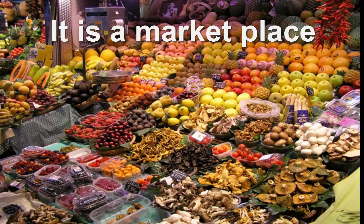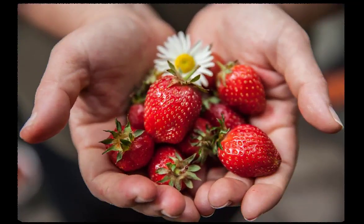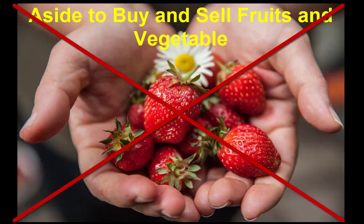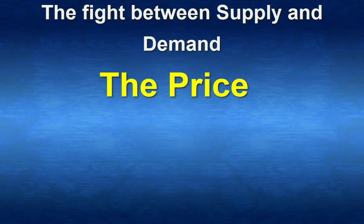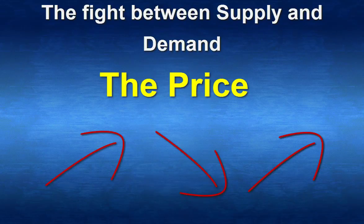What is the stock market? The stock market is a market like the one where you buy your fruits and vegetables, but instead of vegetables and fruits, people buy and sell shares of big companies — for example, indices and commodities. The price of each share is constantly moving up and down, driven by supply and demand.